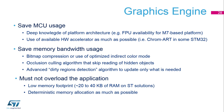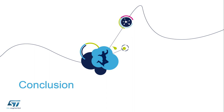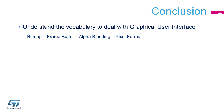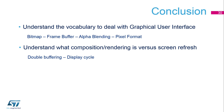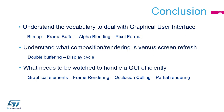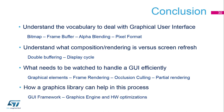In conclusion, after this session you should understand the vocabulary for dealing with graphical user interfaces: what is a bitmap, a frame buffer, alpha blending, and a pixel format. You understand the difference between composition rendering versus screen refresh, what double buffering is, and what the display cycle involves. You know what is needed to efficiently handle a GUI — graphical elements, occlusion culling, and partial rendering — and have an idea of how graphics library solutions help through a GUI framework, a graphic engine, and hardware optimizations.